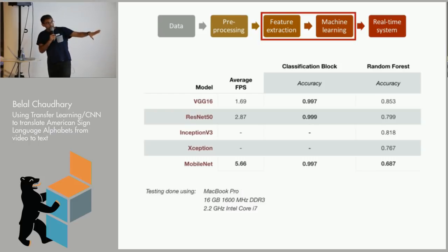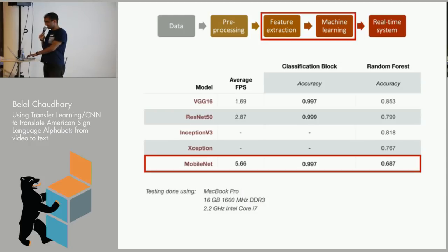And you notice the accuracy as well, it's 99.7% using the classification block, but with a random forest, it doesn't quite work as well. And these tests were all just on my MacBook Pro. Yeah, might have damaged the CPU a bit, but yeah.